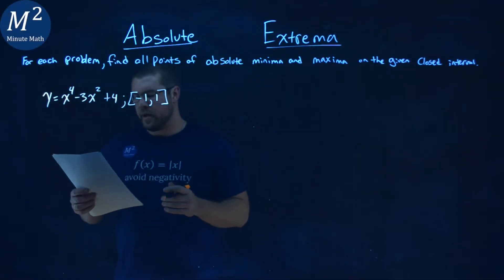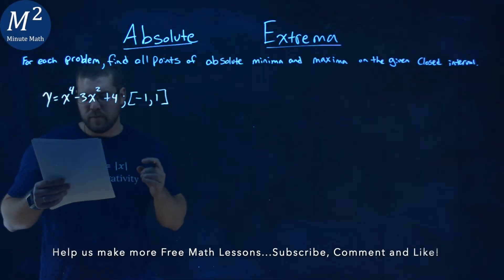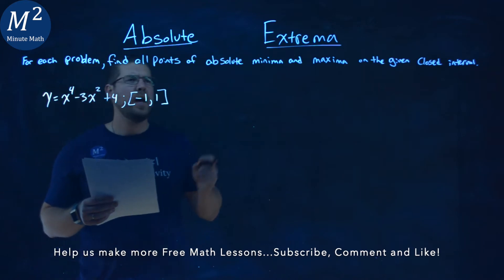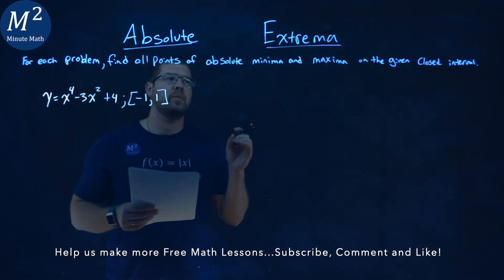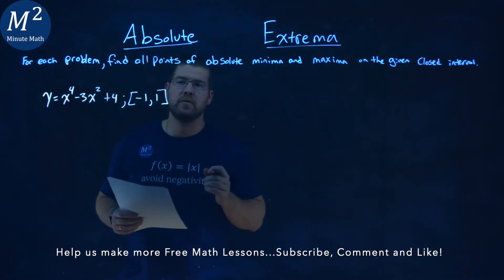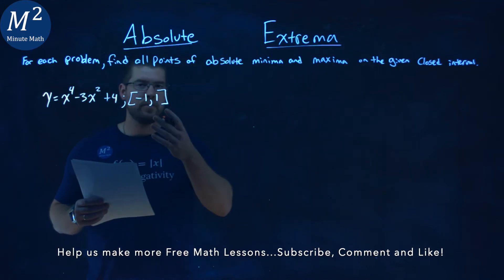We're given this problem right here: y equals x to the fourth power minus 3x squared plus 4. We want to find all points of absolute minima and maxima on our closed interval from negative 1 to positive 1.